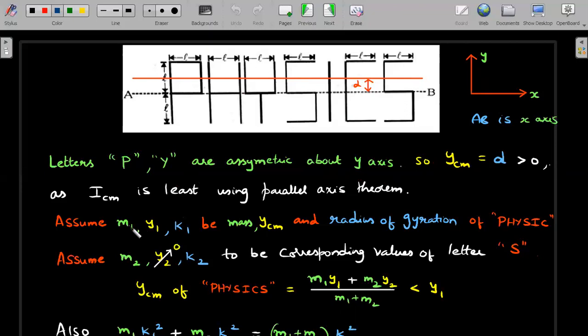Now assume the mass of the letters physics up till this point, PHYSIC up till this part is let's say M1 and the center of mass of only that part is let's say Y1, YCM. That I am talking about only Y coordinate of center of mass is needed in this problem. And K1 is the radius of gyration about this AB axis. Let's say these are the things for the word PHYSIC. And assume the same corresponding quantities that is mass and Y coordinate of center of mass and radius of gyration to be for the letter S.